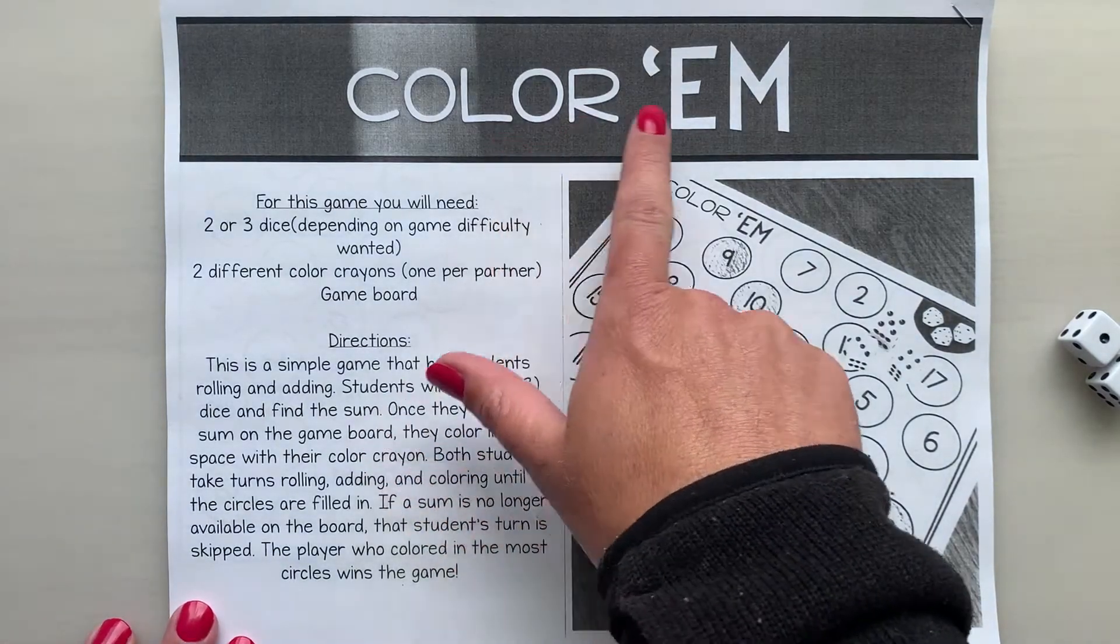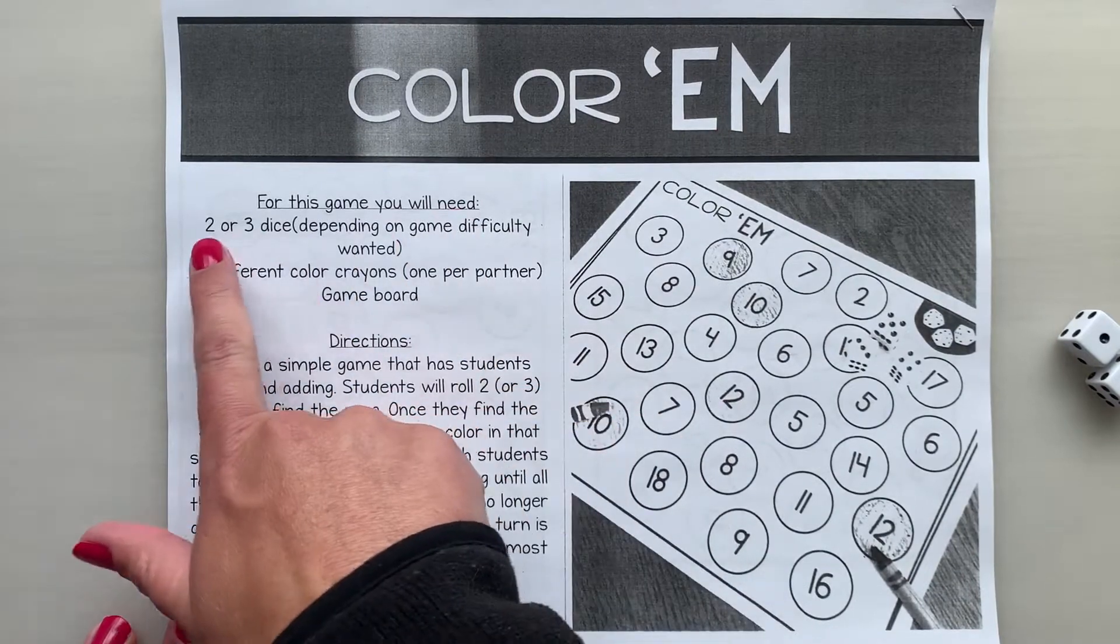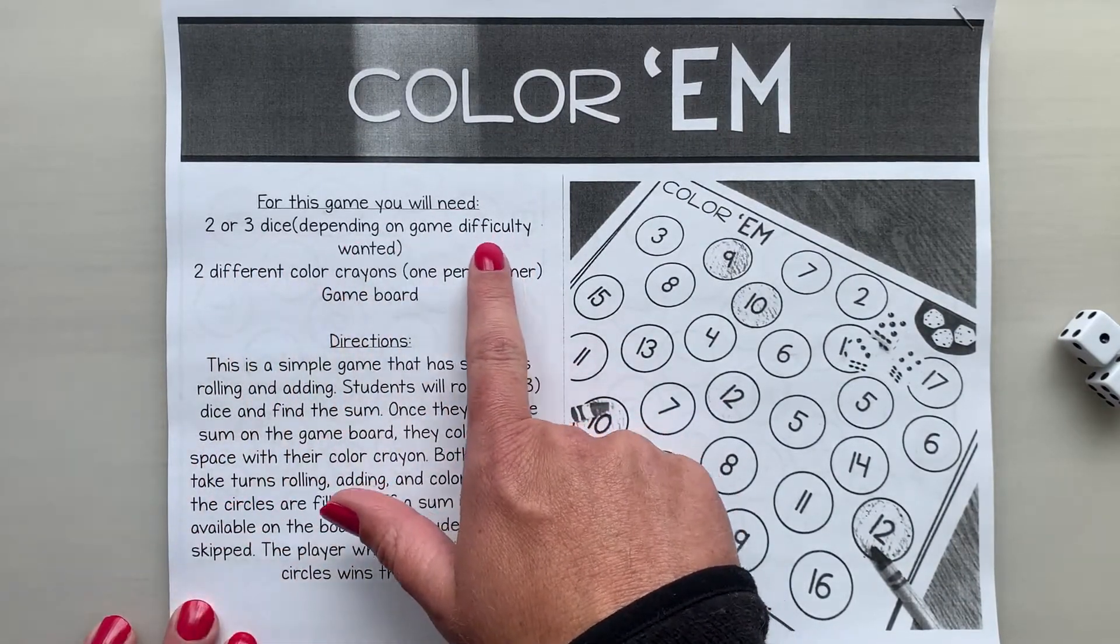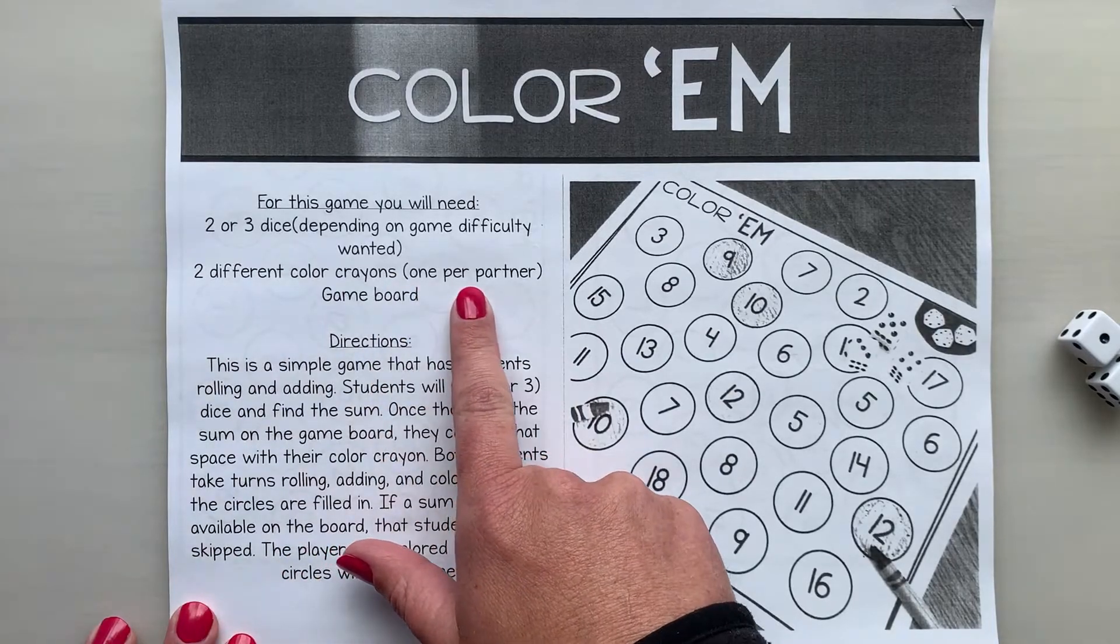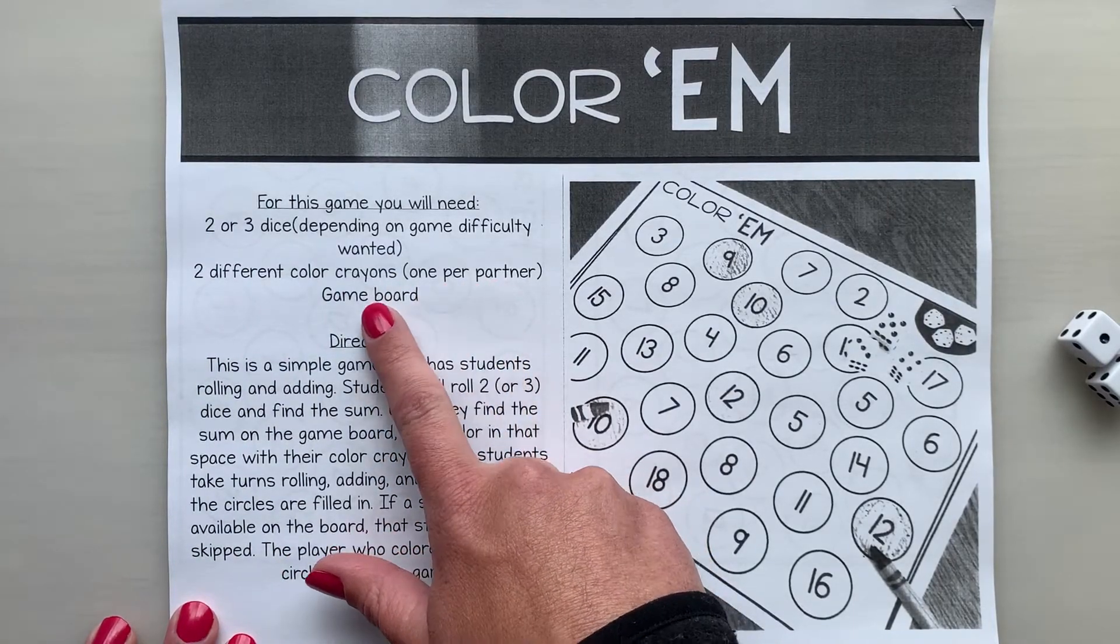This video explains how to play Color'em. For this game you will need two to three dice depending on the game difficulty you want, two different colored crayons, one per partner, and a game board.